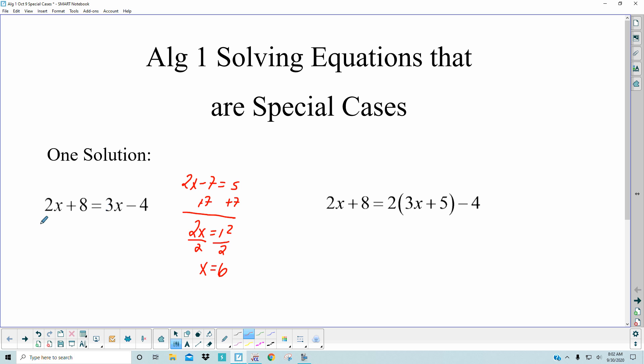Looking at one like this, subtracting the 2x from both sides. You get 8 is equal to x minus 4, and then you would add 4 to both sides, and you got yourself one answer. 12 is equal to x.